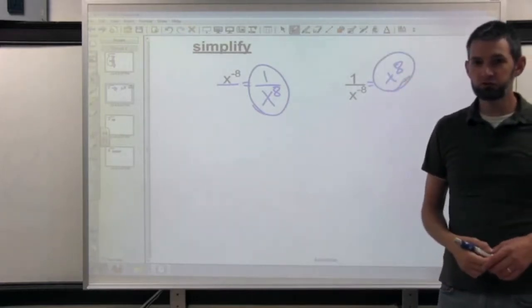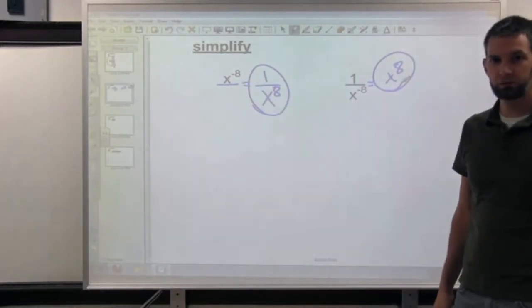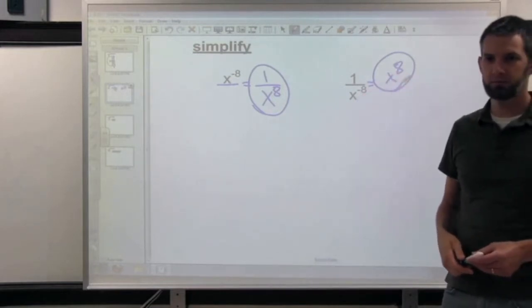So basically what you do when you have a negative exponent, if it's on the top, you move it to the bottom and it's not a negative exponent anymore. If it's on the bottom, move it to the top and it's not a negative exponent anymore.